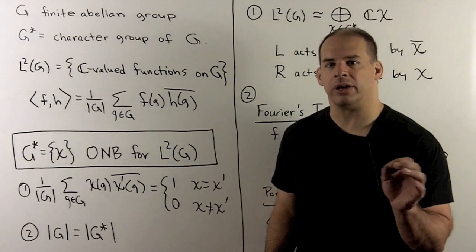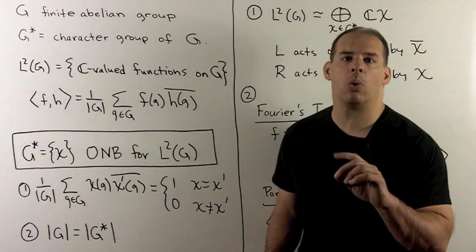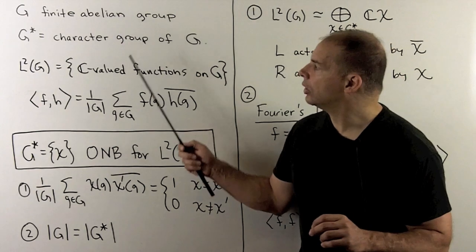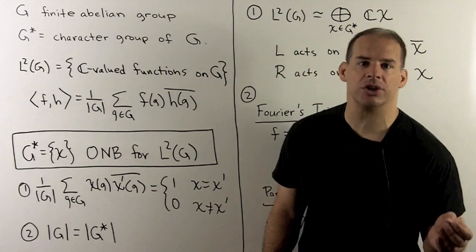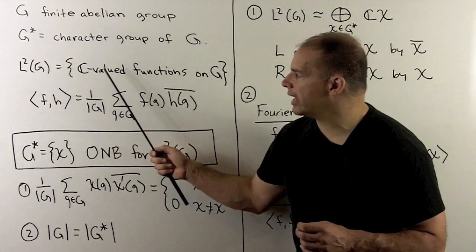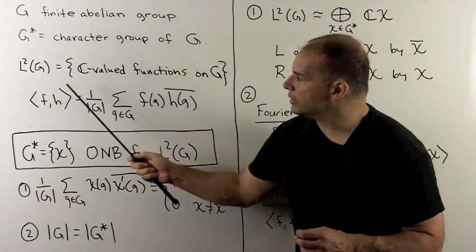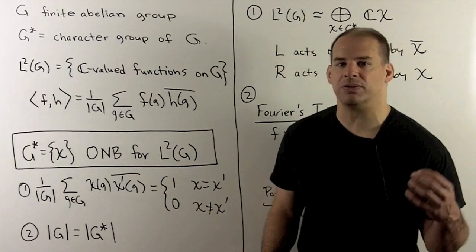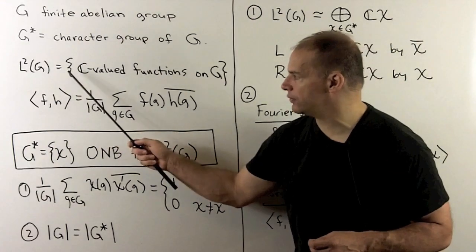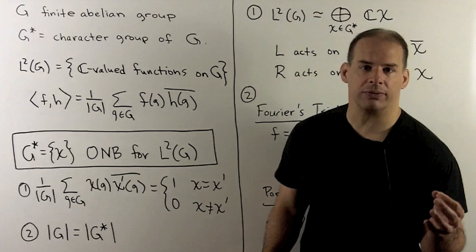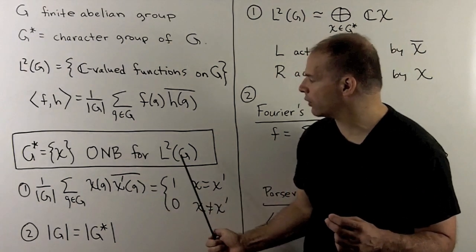Recall, the characters are the irreducible representations of G. Because G is finite abelian, they're all one-dimensional. We're studying L2 of G, the vector space of complex-valued functions on G. We turn this into an inner product space. This inner product is invariant under the left and right actions of G on functions, so we get unitary representations on L2 of G. Our main result from last time: the set of characters forms an orthonormal basis for L2 of G.